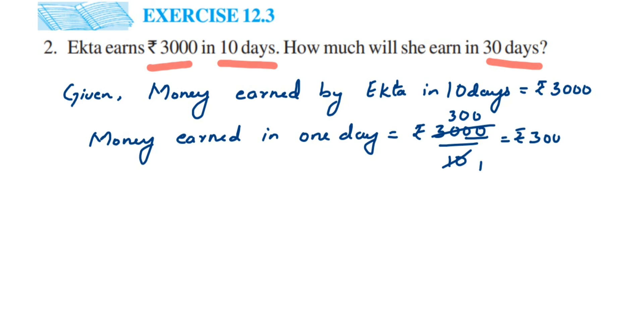Now we have to find out for 30 days. Money earned in 30 days will be 30 multiplied by rupees 300. Three threes are nine, followed by three zeros total, so we'll get 9000. In 30 days she's earning 9000 rupees.